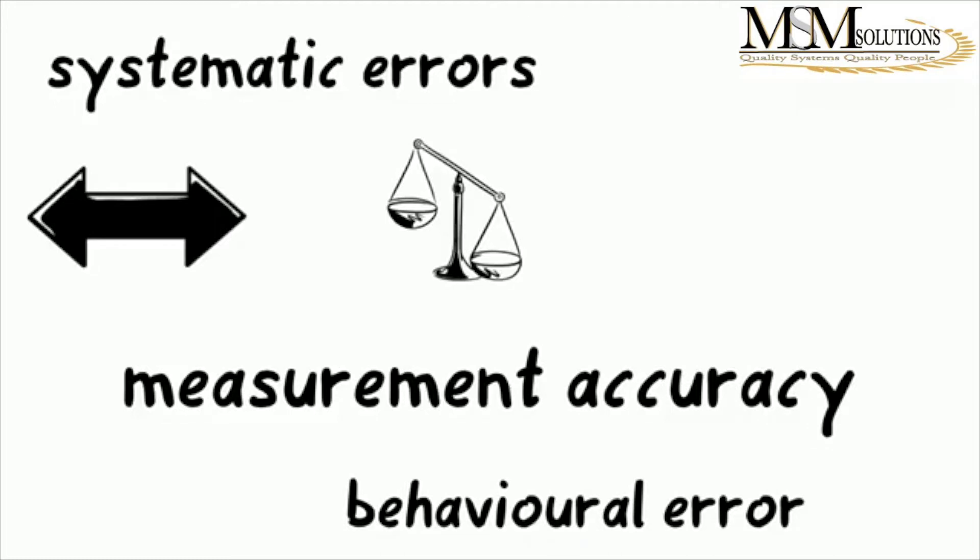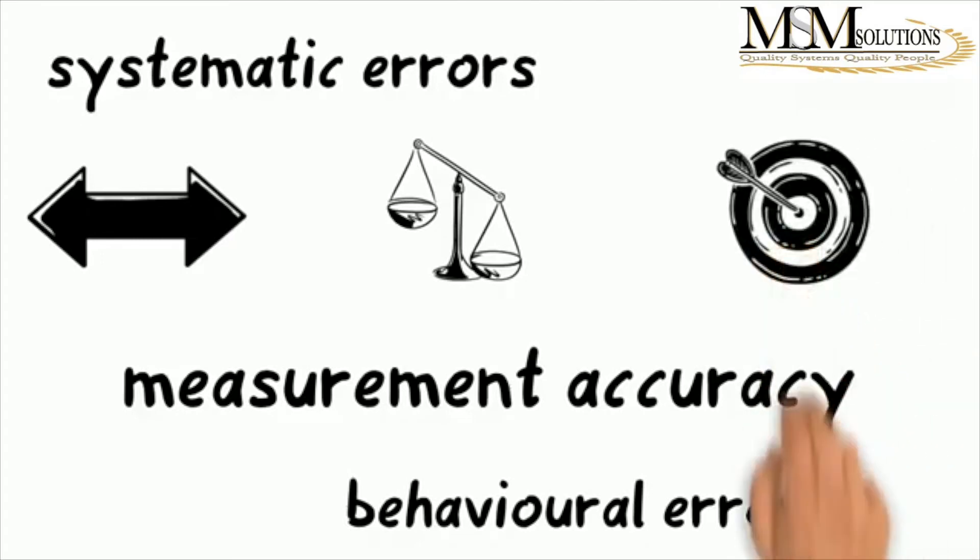And as you can see from these, because it's either, if it's behavioral, the same person doing the same error or an instrument, if it's imperfect and using it every time, you will get the same error consistently. And that will definitely be affecting your accuracy. So that's why systematic errors are set to affect accuracy.